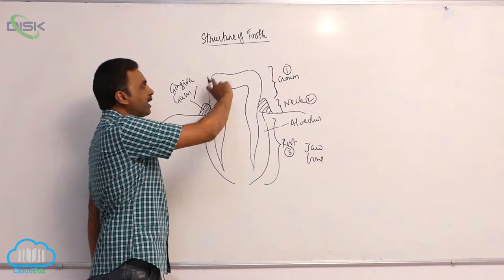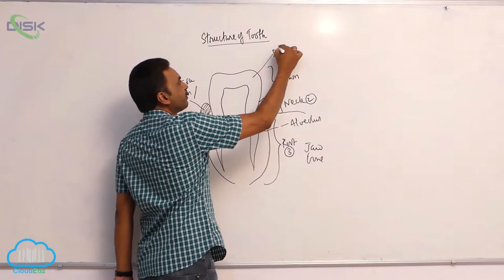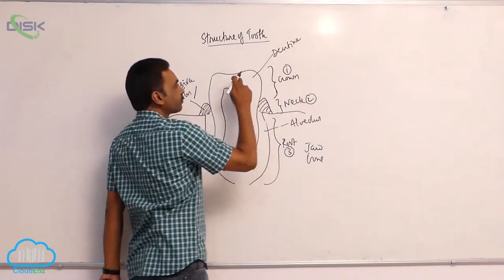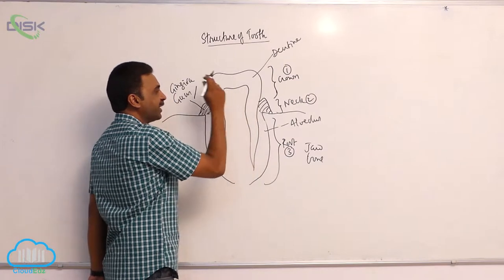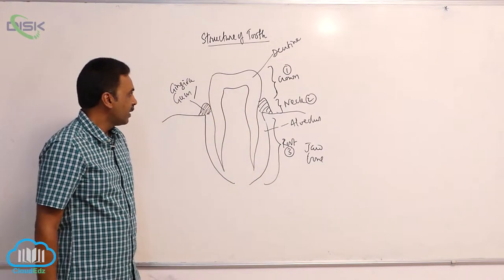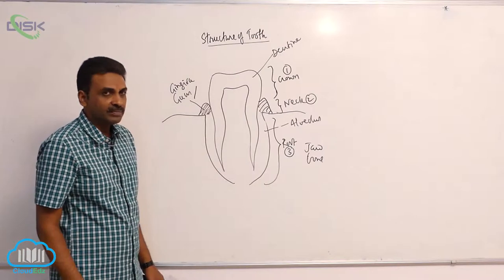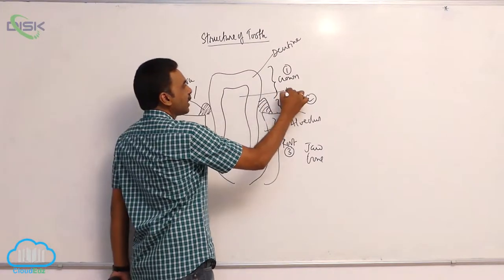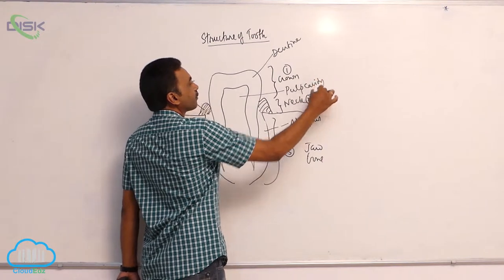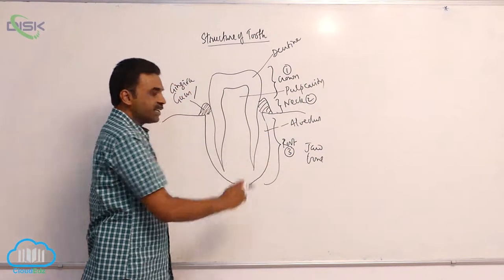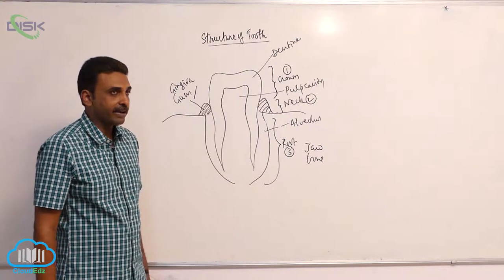The bulk of the tooth is made up of dentine, with a cavity at the center. The cavity is called the pulp cavity.